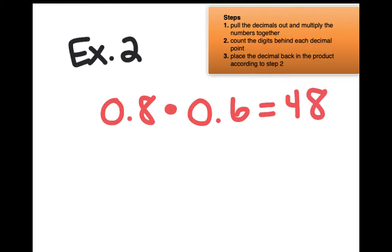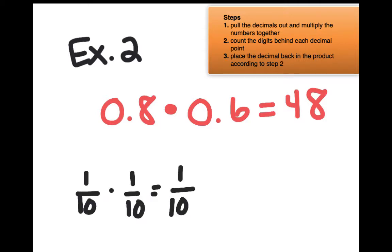Our original problem is not 8 times 6 — it's 8 tenths times 6 tenths. We are taking a tenth times a tenth. Should we have a digit in the hundredths place if we're taking a tenth times a tenth? Yes, because 1 tenth times 1 tenth gives me a hundredth, so I need a digit in the hundredths place. Using our steps: pull the decimals out — it would be 8 and 6, so 8 times 6 is 48. Count the digits behind each decimal point: one digit, two digits. Place the decimal in the product according to step 2, moving back in however many digits were behind the decimal. So my new product would be 48 hundredths.